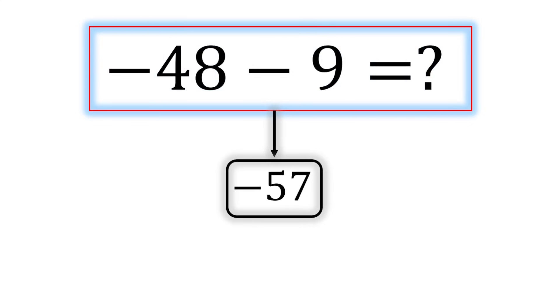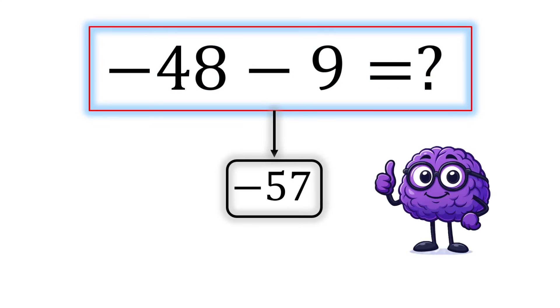Negative 48 minus 9 equals negative 57, therefore, our final answer is negative 57.